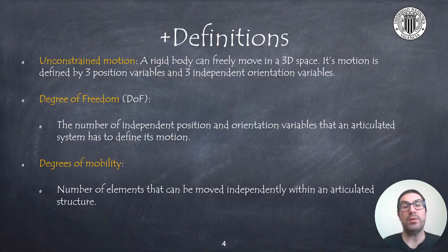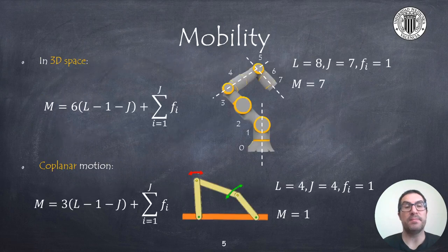While, on the other hand, the degrees of mobility are the number of elements that can move independently, usually referred to as the number of actuators of a robotic system.